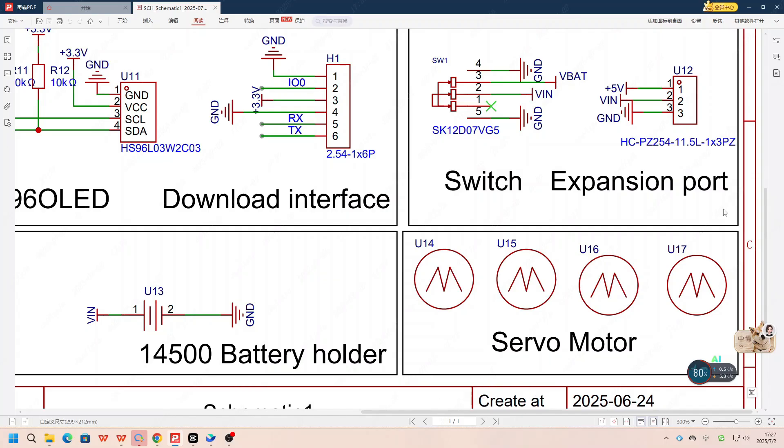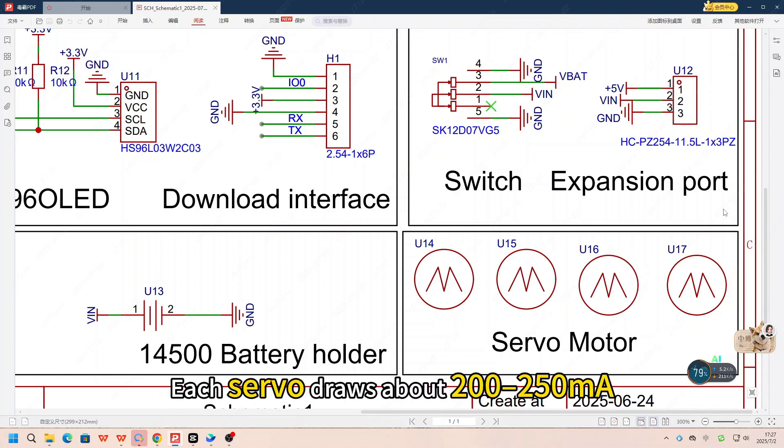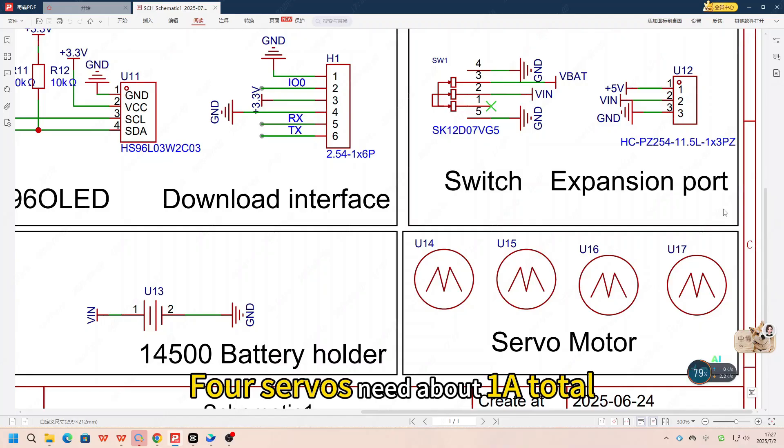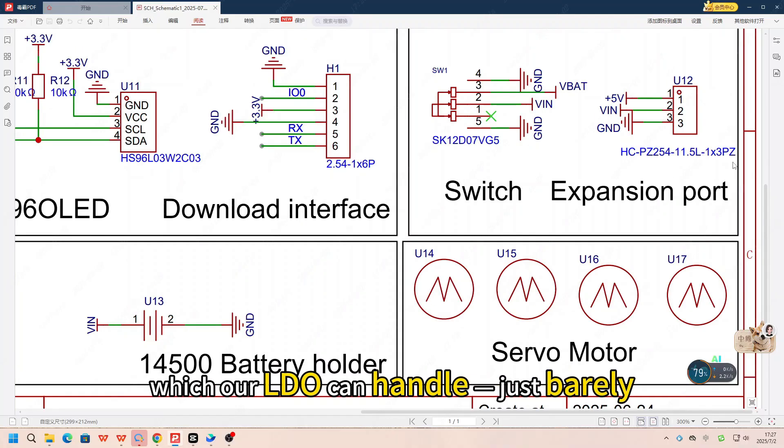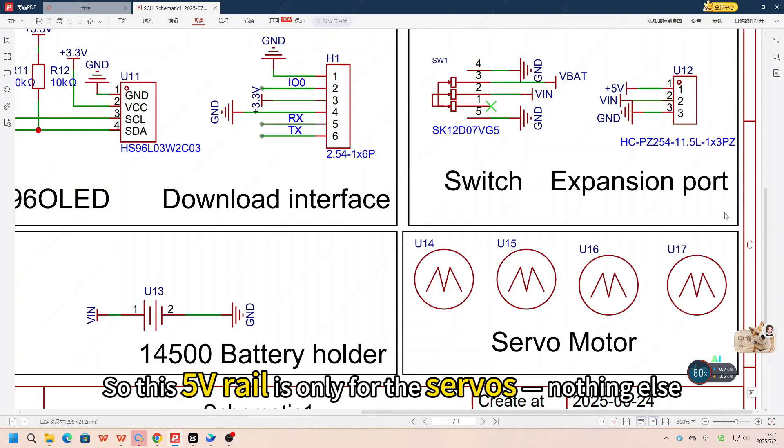Now for the servo motors, based on the datasheet, they need 5V power. So we supply that directly from the 5V LDO. Each servo draws about 200 to 250mA. Four servos need about 1A total, which our LDO can handle just barely. So this 5V rail is only for the servos, nothing else.